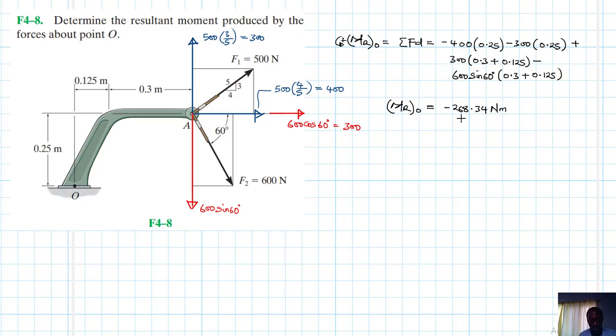Let me check it once more. That's minus 400 plus minus 300 times 0.25, plus 300 times 0.3 plus 0.125. Maybe this one I can say 300 minus 600 sin 60, times 0.3 plus 0.125.